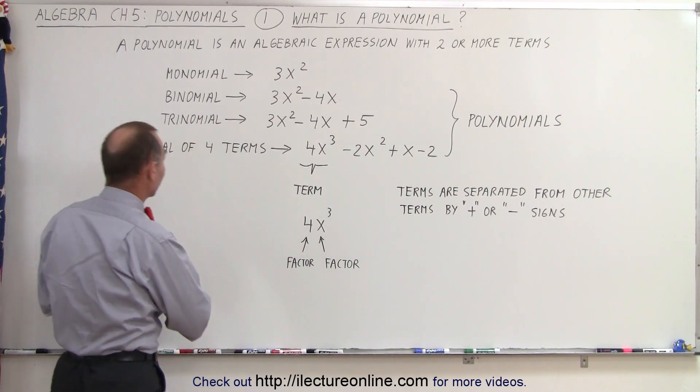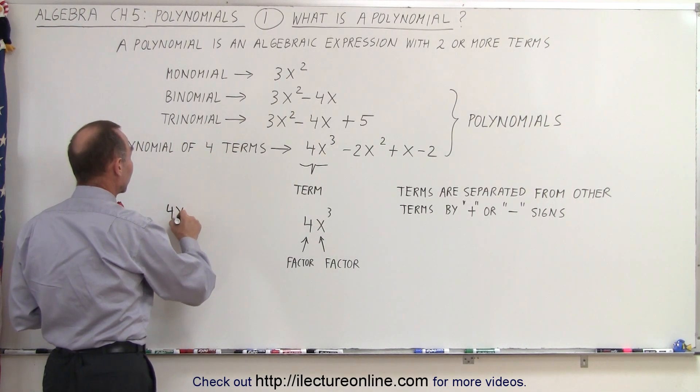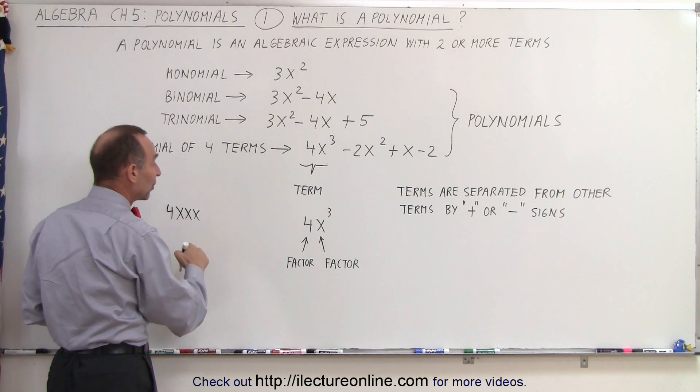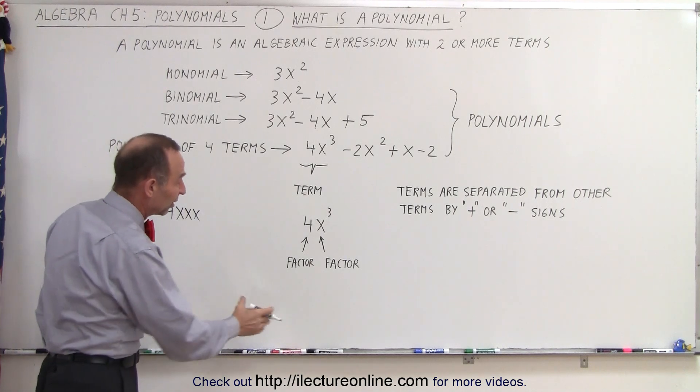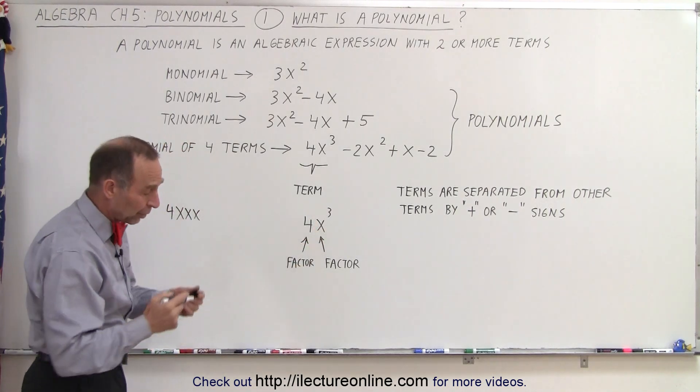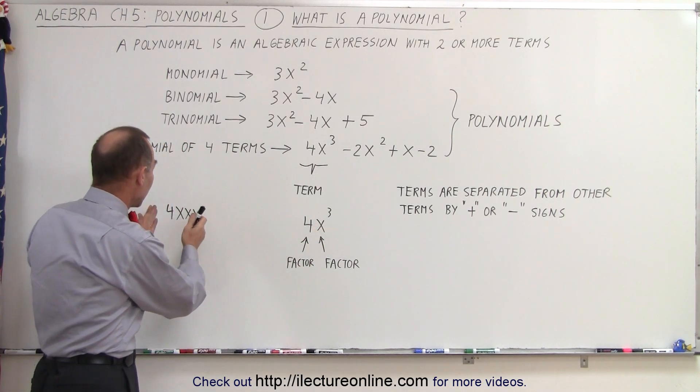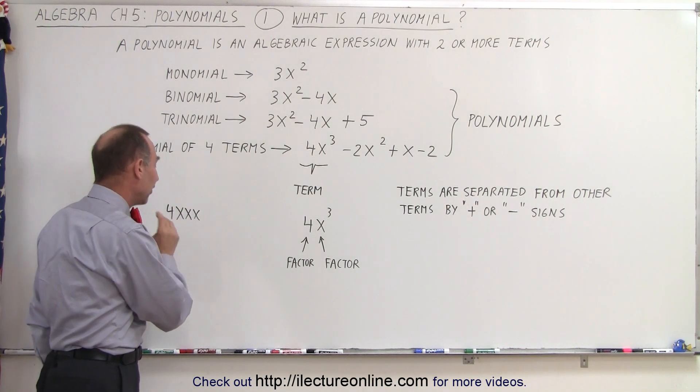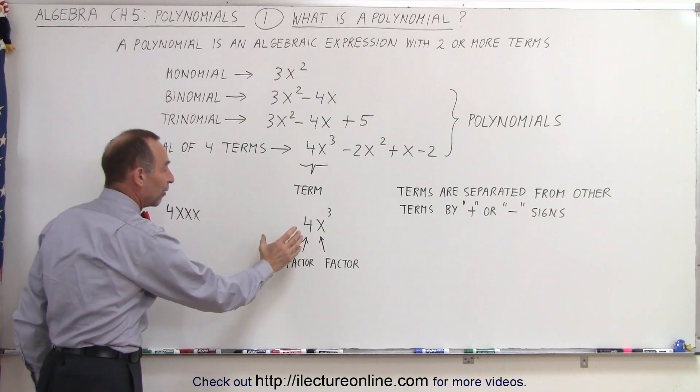However, you can think of it as this: if you have 4x³, that is actually four times x times x times x, so you can think of this as perhaps being four factors, or two factors, whichever way you want to look at it. Simply, expressions or numbers or letters or variables multiplied together are factors.